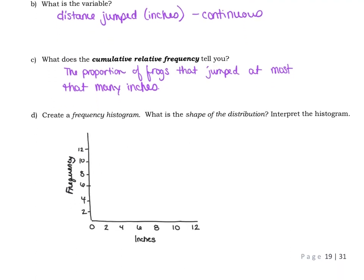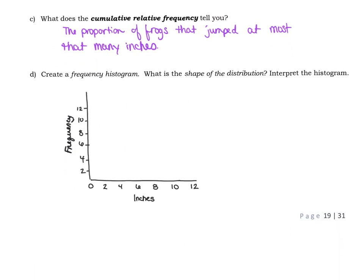Last but not least we're supposed to create a frequency histogram. So I cheated and I did a little bit of work ahead of time. I've got my scale and stuff here drawn out. So what are some things that we need? We do need a title, so I'm going to throw on a title here of distance jumped. Along the bottom I've labeled inches and I've got the lower class limits. We do need to include the 12, which would be the start of the next class.